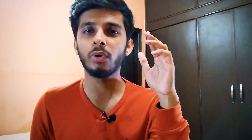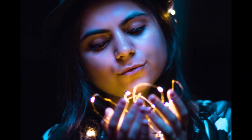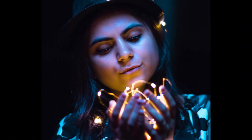If you are shooting in low light conditions, you have to use a low aperture number, which gives a big opening, which lets more light into the camera, and you will get a good photo.